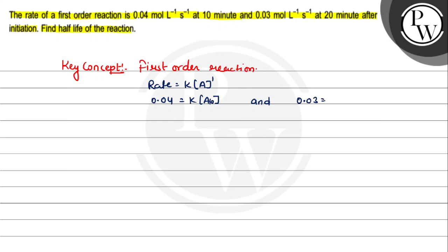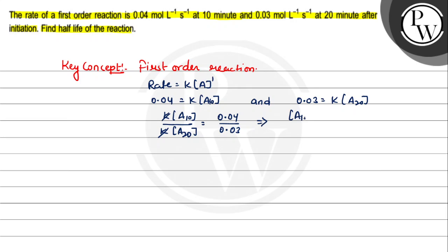Similarly, 0.03 is the rate at 20 minutes. Dividing A at 10 minutes by A at 20 minutes gives us 0.04 divided by 0.03, which equals the concentration ratio A(10) over A(20), giving us 4 by 3.